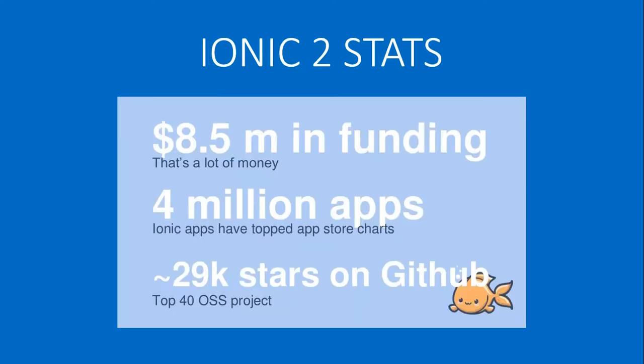These are the Ionic 2 stats: $8.5 million in funding, that's a lot of money. There are almost 4 million apps running on the Ionic framework, 29,000 stars on GitHub, and it is a top 40 open source project.